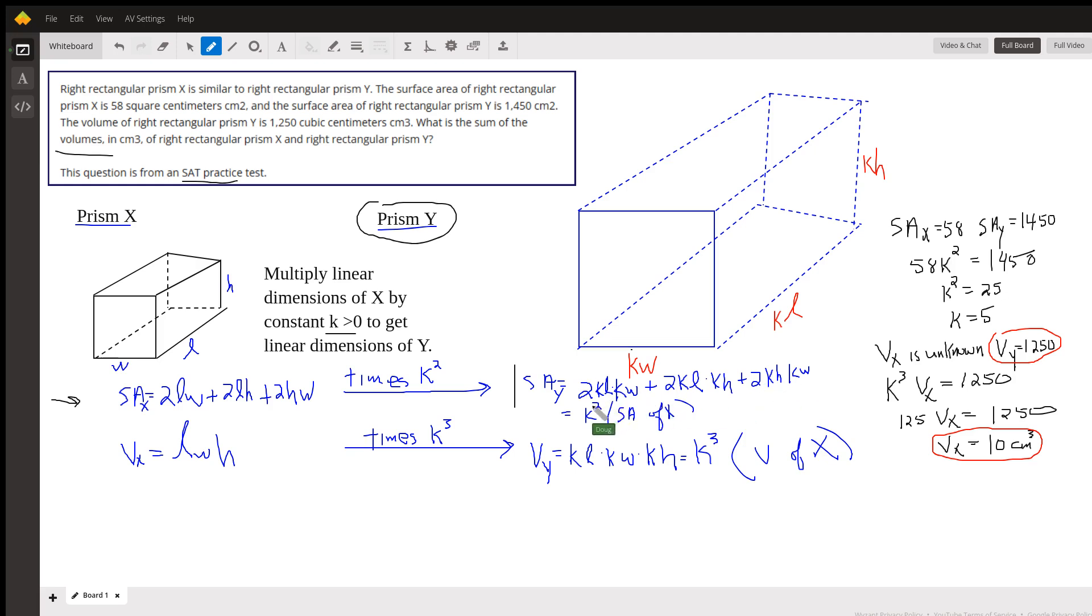But notice that every term has K times K in it. So I can factor out a K squared. And what's left is that expression right there. So K squared times the surface area of prism X will give me the surface area of prism Y.